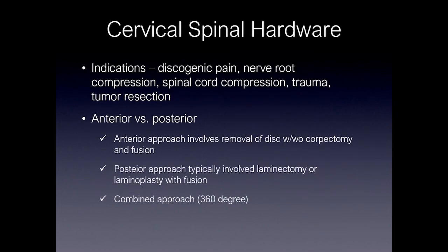Cervical spine fusion indications include discogenic pain, nerve root compression, spinal cord compression, trauma, and tumor resection. These tend to be performed either by an anterior or posterior approach. The anterior approach involves removal of the disc, typically with some level of fusion, and these can be performed with or without corpectomy, otherwise known as removal of the vertebral body.